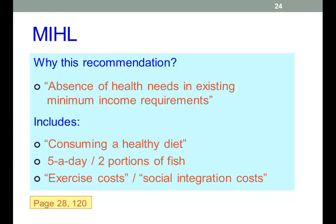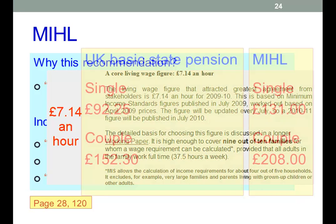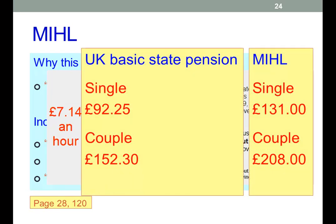There are quite complicated calculations done by people like the Rowntree Trust. The figure they came to was a core living wage of £7.14 an hour, which is a little bit more than the current minimum wage, and for pensioners quite a lot more — though the government has recently announced an upgrading of pension incomes.